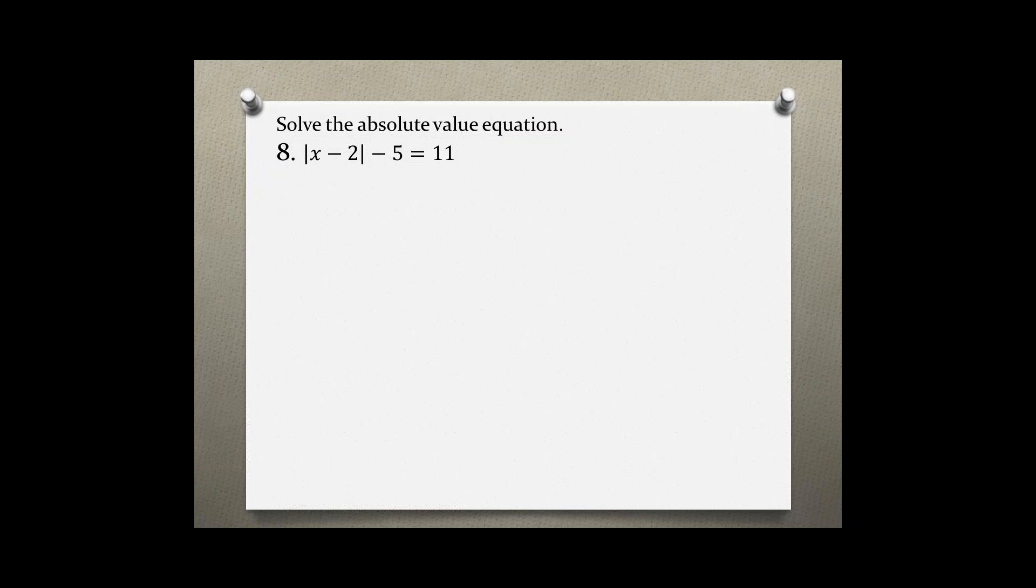Solve the absolute value equation, problem number 8: the absolute value of x minus 2 minus 5 equals 11. To solve this absolute value equation, we first have to isolate the absolute value part which is x minus 2.